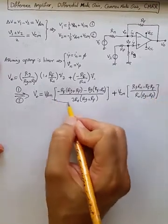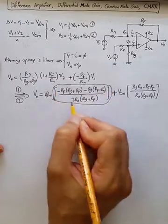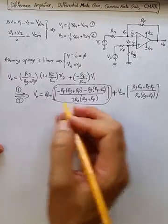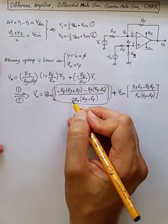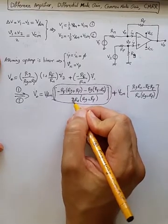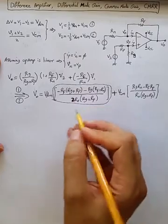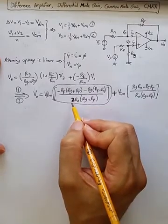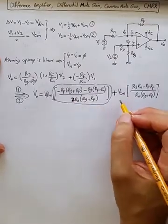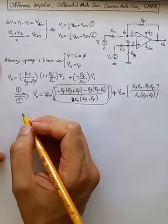This is the differential mode gain, because that is the value multiplied by Vdm. The differential mode gain is the one that is Vout over Vdm, so we need to have the two in the denominator here. This is the differential mode gain, and this is the common mode gain we have here.